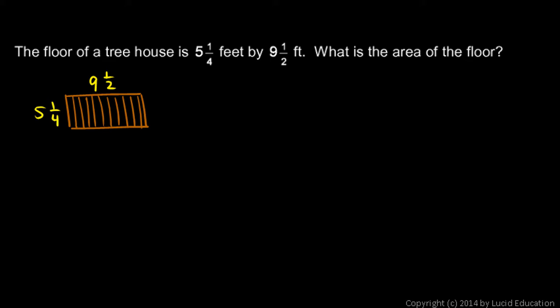Well, the area is length times width. So in this case, we need to multiply 5 and 1 quarter times 9 and 1 half. The area of any rectangle is its width times its length, or length times its width, either way. But I need to multiply these two numbers. So I'm going to write 5 and 1 fourth times 9 and 1 half.